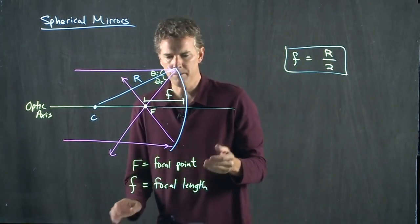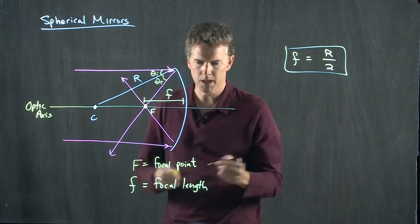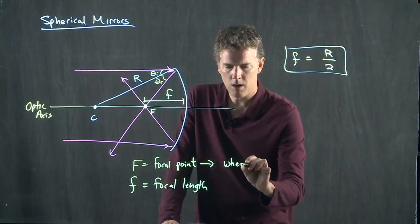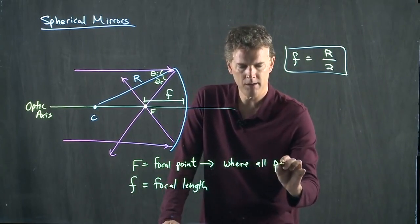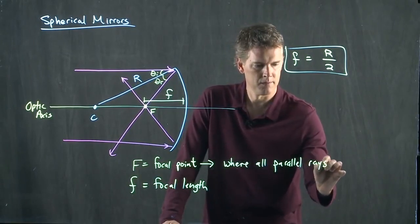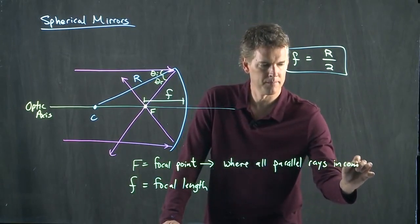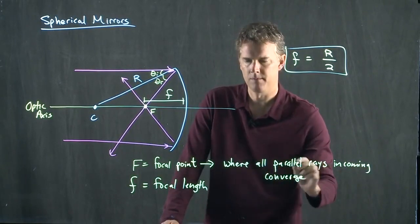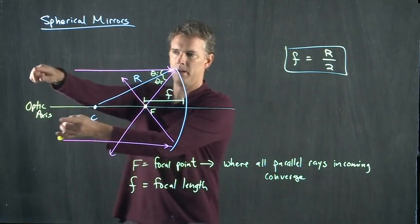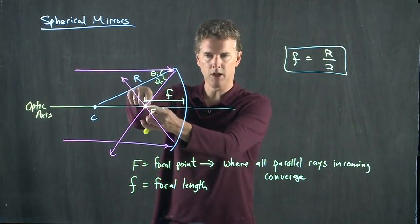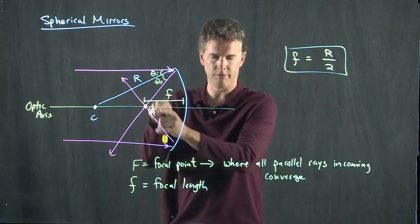So what do we mean by focal point? Focal point means where all parallel rays incoming converge to. All these parallel rays that came in bounced off the mirror, and they converge right at the focal point.